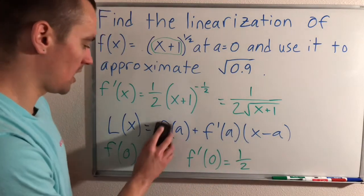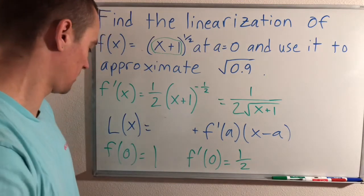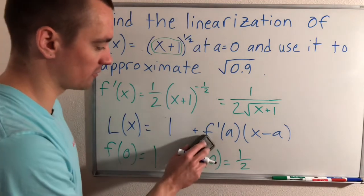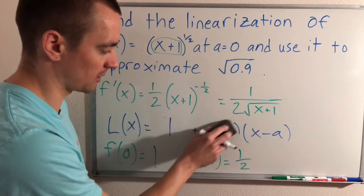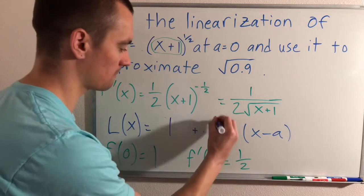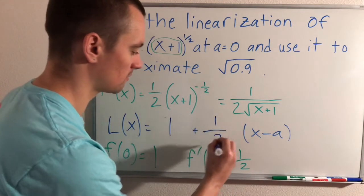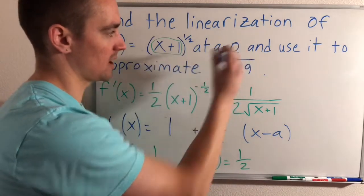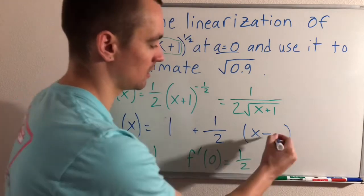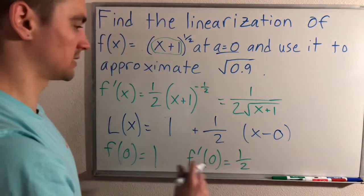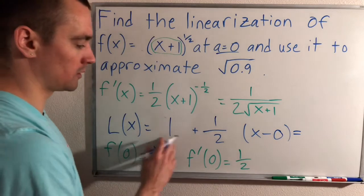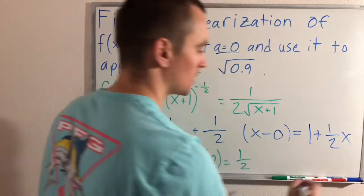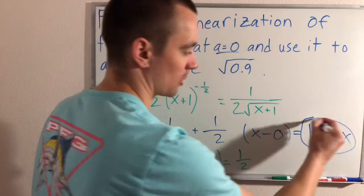Plugging those values into the linearization formula — replacing f(a) with 1 and f'(a) with 1/2, and using a = 0 — we get L(x) = 1 + (1/2)x. This is our linearization.